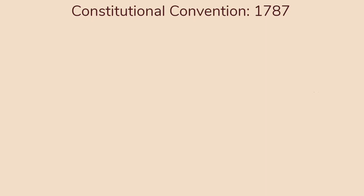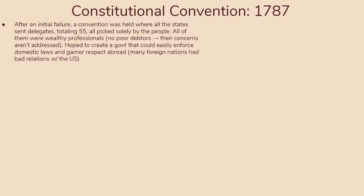Because of all of these events, we have the Constitutional Convention in 1787. After an initial failure to launch, the convention led to all states sending delegates, totaling 55, all picked solely by the people. All of them were wealthy professionals, which meant the concerns of the poor classes weren't really represented or addressed. They hoped to create a government that would easily enforce domestic laws and garner respect abroad, since many foreign nations at this point had bad relations with the U.S. In order to grow as a republic and international power, they needed to maintain strong relations with other countries — both economically and diplomatically. But first, they needed to repair some things domestically, starting with a plan for representation.